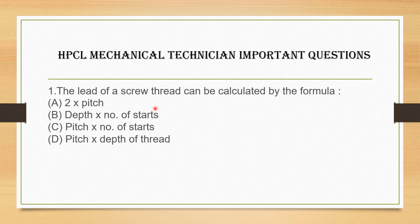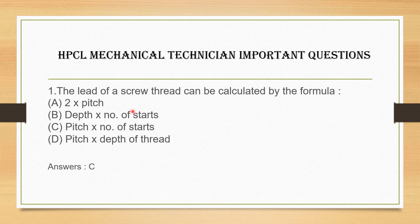This is a multiple choice question. The options are: 2 into pitch; depth; number of starts into pitch depth of the thread. The correct answer is option C — screw thread lead equals pitch multiplied by number of starts. So pitch and number of starts, when multiplied together, give the screw thread lead.